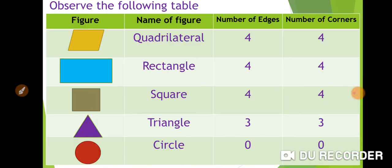Now observe the following table. Children, in this table you can see different types of figures, name of that figures, number of edges and number of corners. So let's start. First one is Quadrilateral.